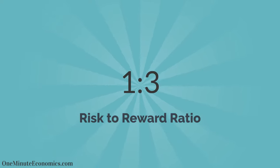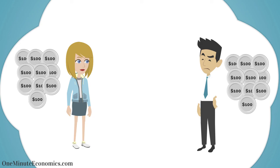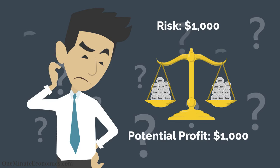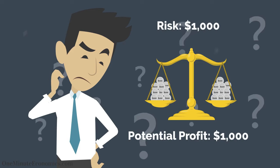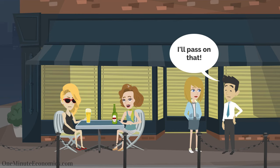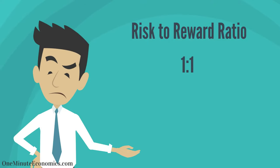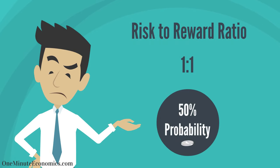As another example, Bill's friend Rachel makes him an offer that they both put down $1,000, flip a coin, and whoever wins receives the resulting $2,000. Bill quickly realizes that he would risk $1,000 for a $1,000 potential profit and refuses, explaining that a risk-to-reward ratio of 1 to 1 for a 50% probability coin toss is not attractive, since he is not at a probabilistic advantage.